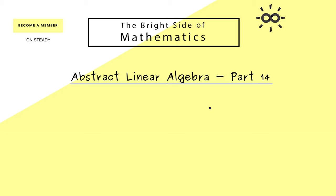This holds especially for the topic in today's part 14, which will be about the orthogonal projection onto a line. The only thing we need for doing this is an inner product in our vector space.